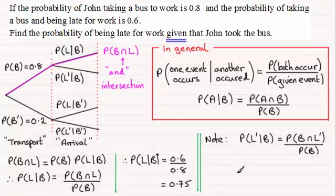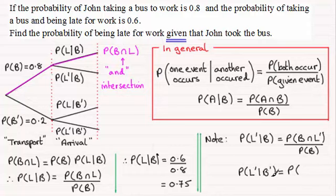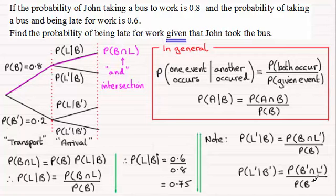Let's try another one. Suppose you're asked to work out the probability that John is not late for work given that he didn't take the bus. This would be the probability of both events occurring. Again I could write it as P(L'∩B'), but turning it round — same probability — it's the probability of not taking the bus and not being late for work, divided by the probability of not taking the bus, P(B').